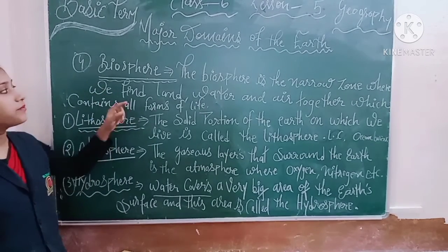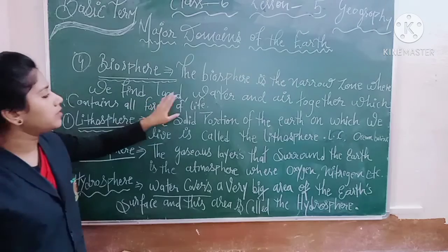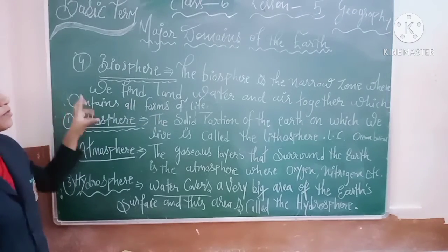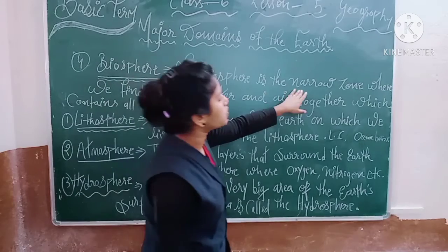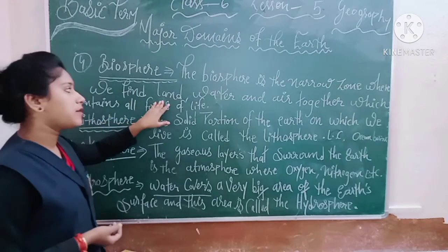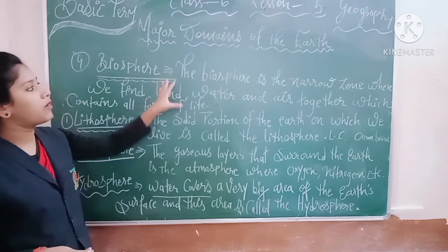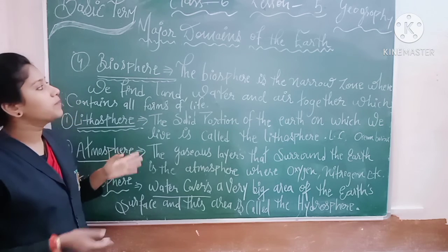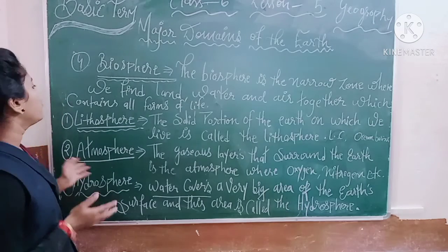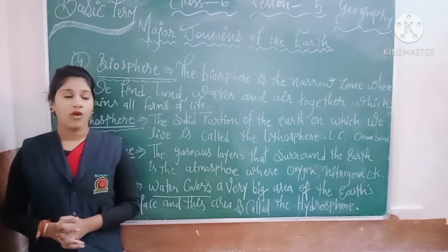So what is biosphere? The biosphere is the narrow zone where we find land, water, and air together, which contains all forms of life. So the biosphere is that narrow zone where land, water, and air are found together.